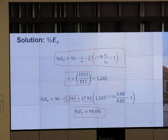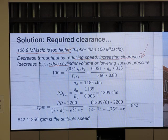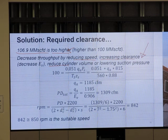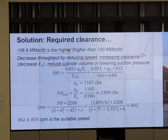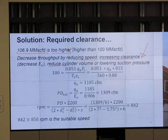106.9 million actual cubic feet per day is too high, higher than 100 million. Decrease throughput by reducing speed, increasing clearance, reducing cylinder volume, or lowering suction pressure. By doing any of this, we can have it deliver a little less. Why do we want to match 100 million? We don't want to pump or compress more than what is coming in. If it comes just 100 million but we try to compress and push it through like 106, it's too much.